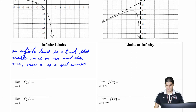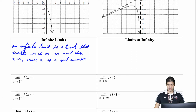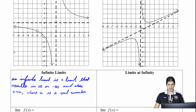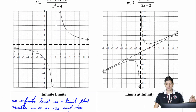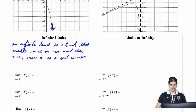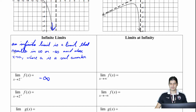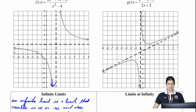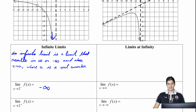Let's look at the limit of f of x as x approaches 2 from the left. So f of x is on the left side there. Approaching 2 from the left side, we're going straight down, and so that's going to be negative infinity. And then now looking at 2 from the right side, we're going straight up, and that's going to be positive infinity.